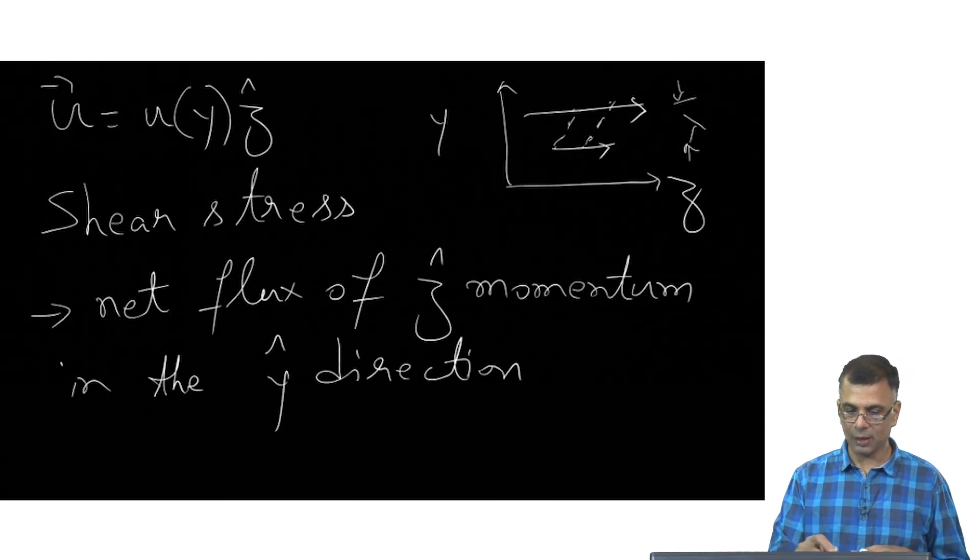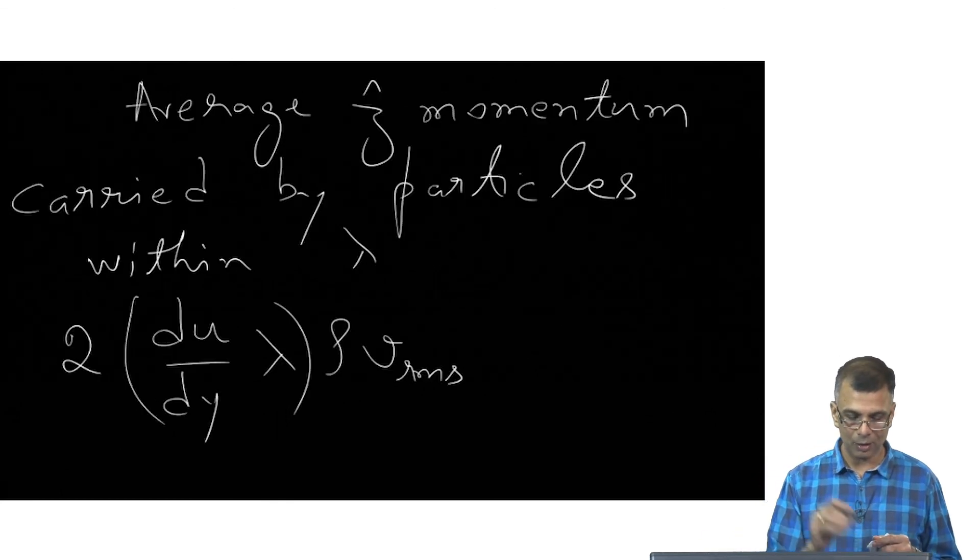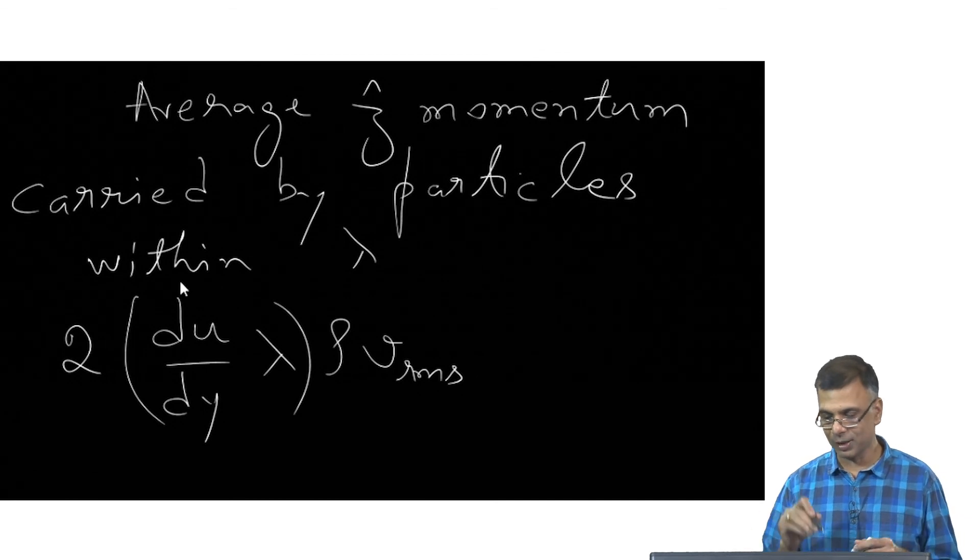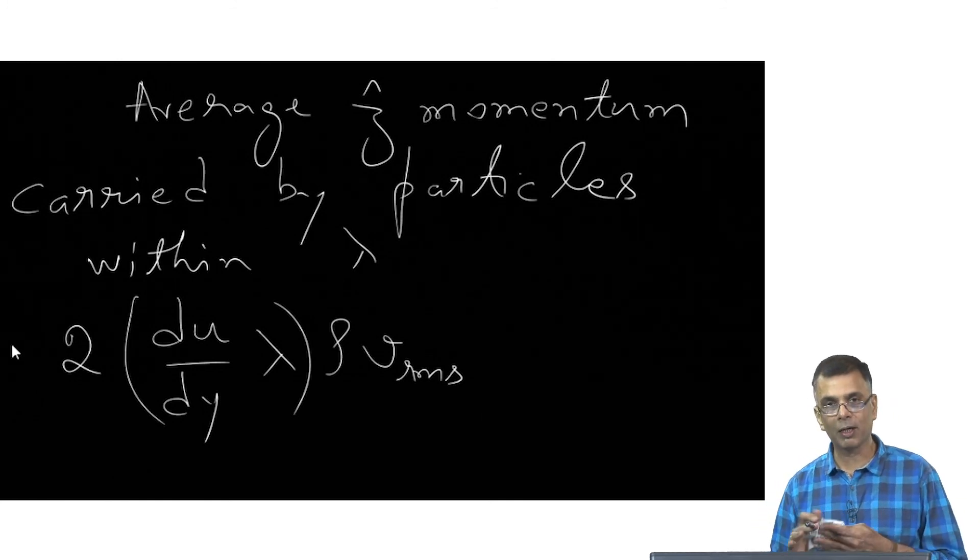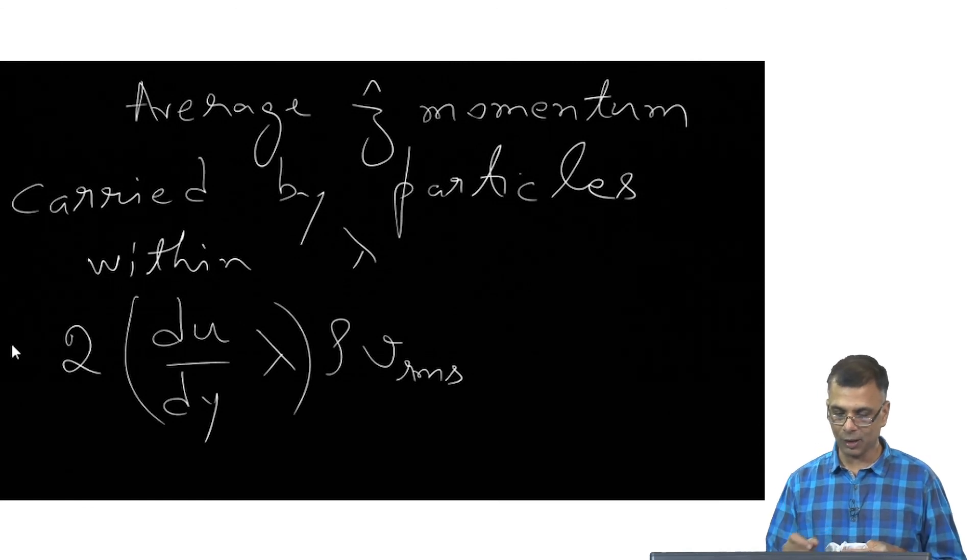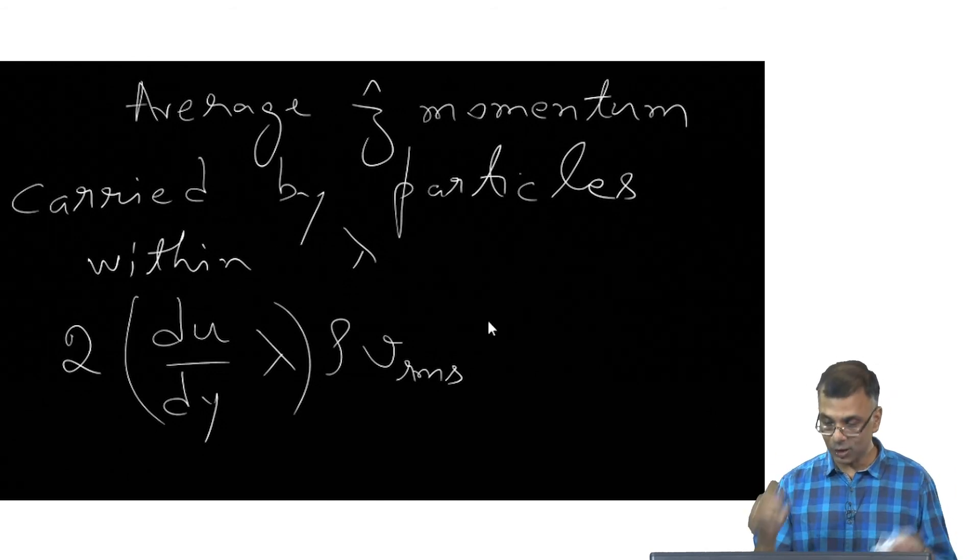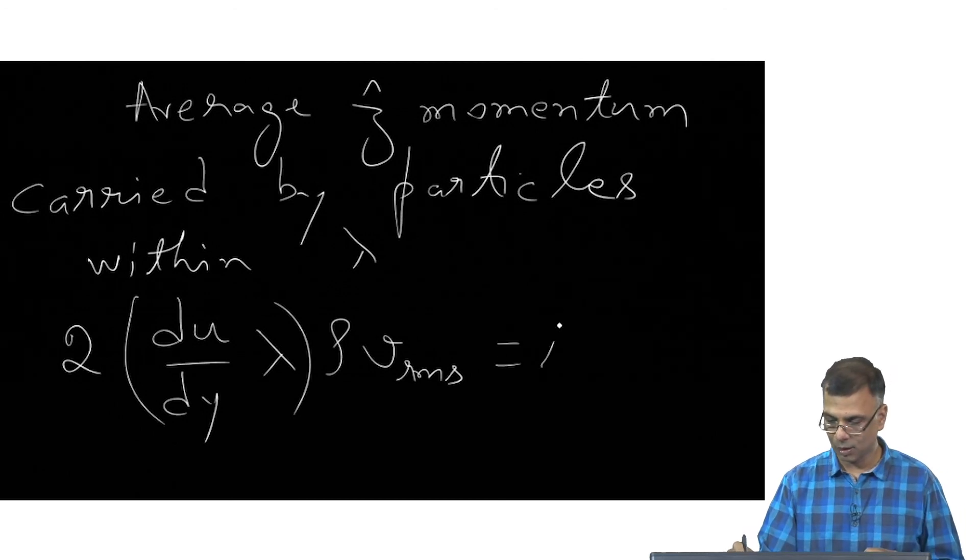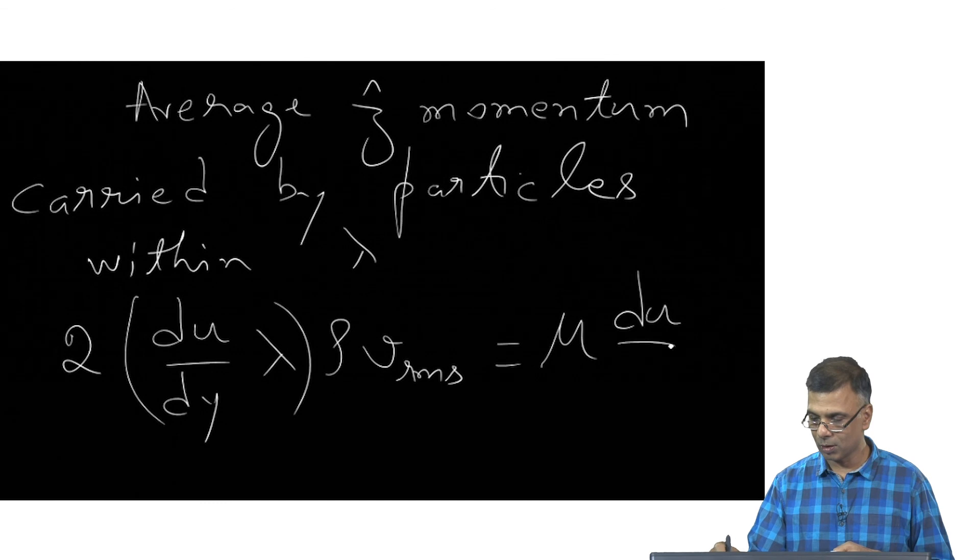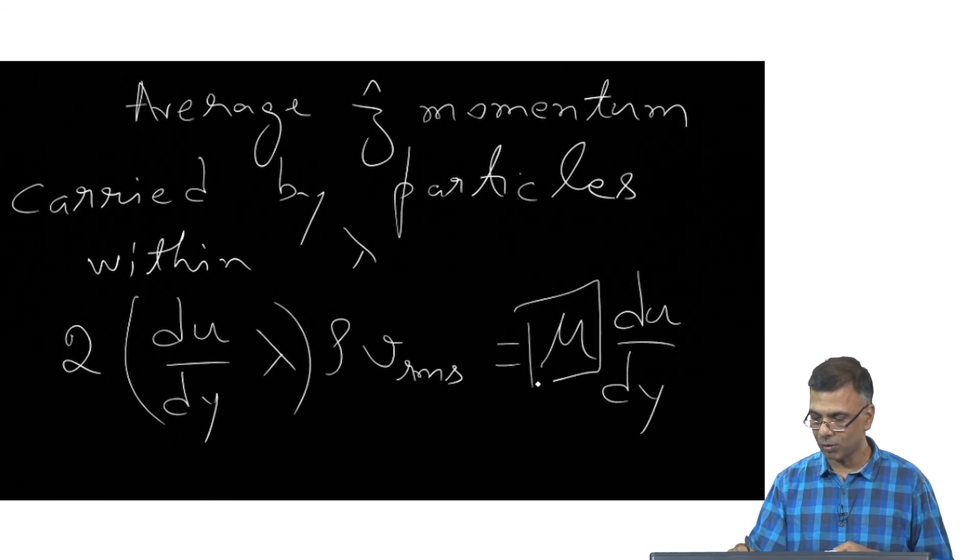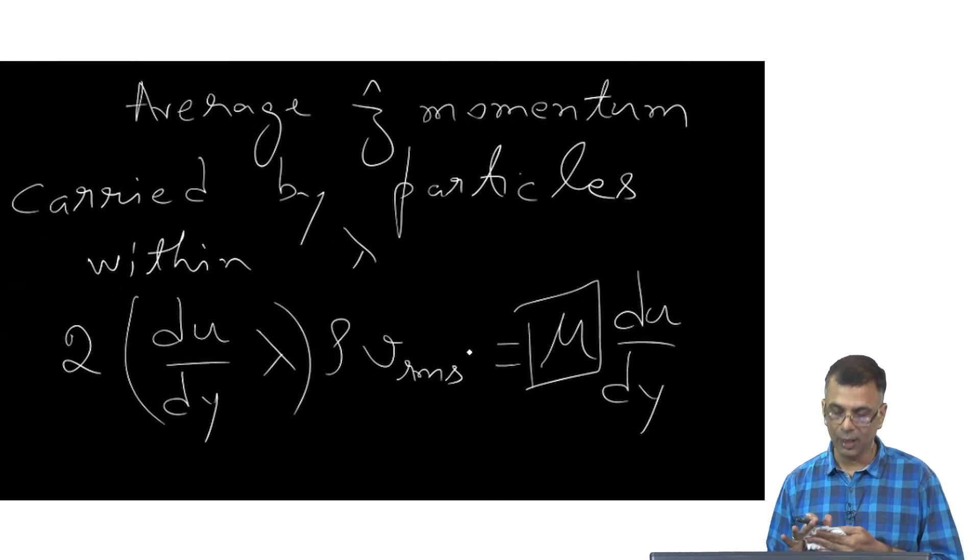The unidirectional mass flux is ρVrms. The magnitude of the average z-momentum carried by particles within a mean free path lambda is (du/dy)×lambda. You multiply that with ρVrms. Because you have particles going on both sides of the plane, you have a factor 2. The shear stress equals this: τ = 2ρVrms×lambda×(du/dy). This is how μ is derived from the microscopics.